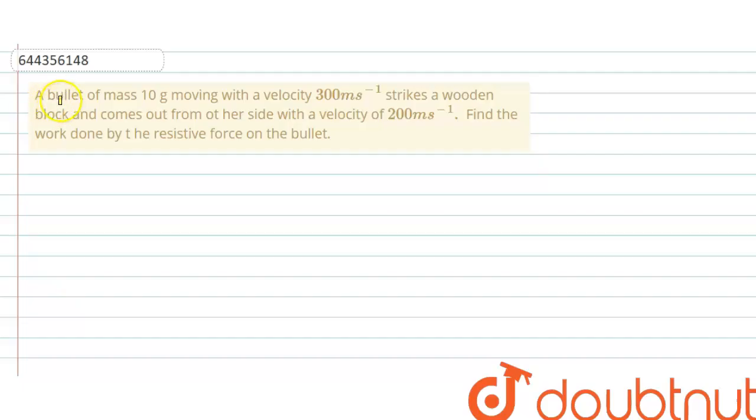Hello everyone, let me explain this question to you. A bullet of mass 10 gram moving with velocity 300 meter per second strikes a wooden block and comes out from the other side with a velocity of 200 meter per second. Find the work done by the resistive force on the bullet.